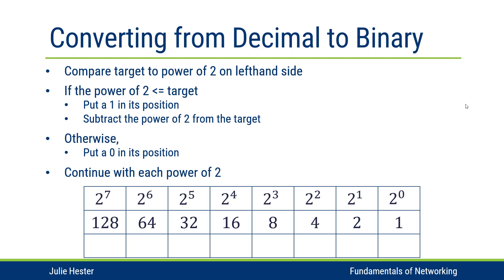Here's the overall idea of what we're going to do. I want to compare my target that I am trying to convert to the power of two on the left-hand side, starting with two to the seventh power, equivalent to one twenty-eight. If that power of two — one twenty-eight — is less than or equal to my target, then I'll put a one in that position and subtract that power of two from my target because I've used up that value. Otherwise, I'll put a zero in that position, and then move on to the next column, doing each column one by one.